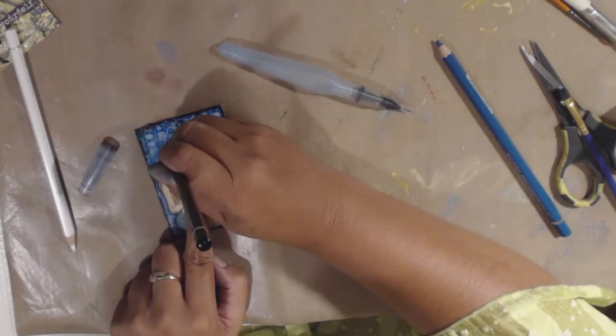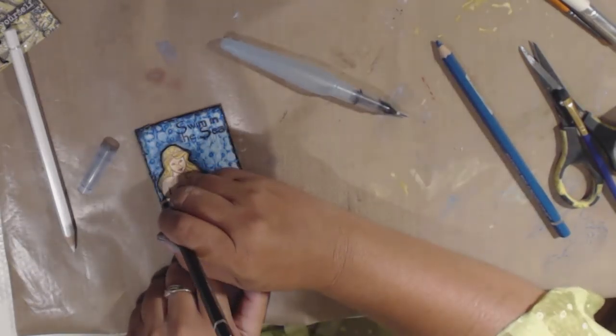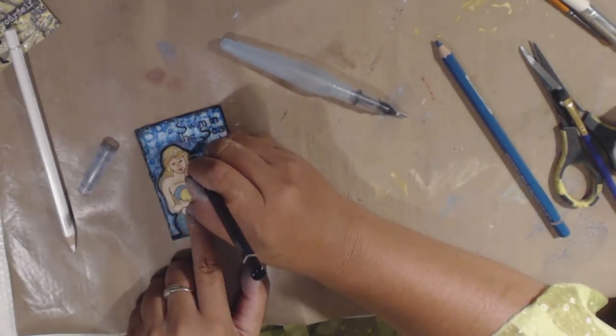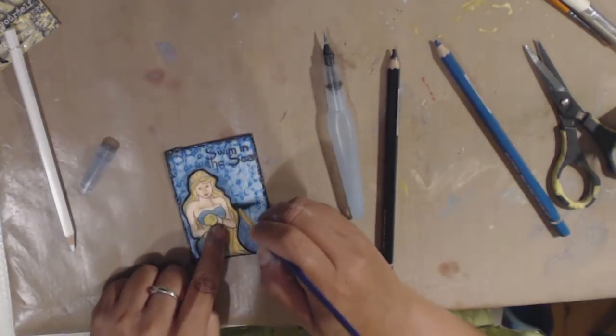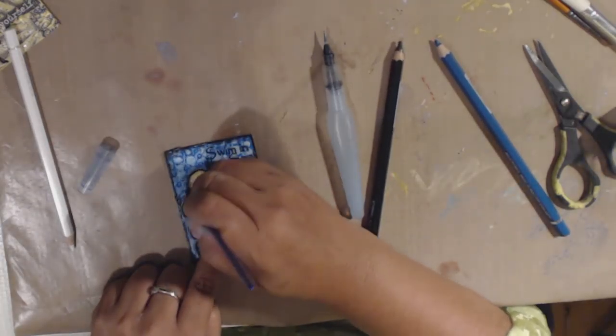For some reason I decided that I wanted my mermaid to pop out a bit more, so I outline her with the black watercolor pencil again and just blend it in a bit more and shade it in.